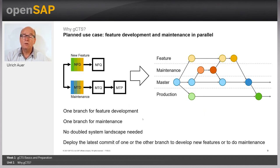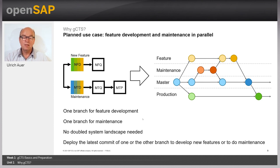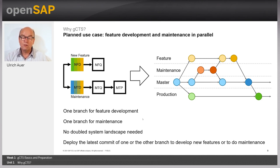Let me introduce some usage scenarios that were impossible before. Maintaining several releases of software components previously required parallel system tracks and complicated double-maintenance work — known as switchover or retrofit. With GCTS, you can maintain several releases of a software component with one system by switching between branches, such as a development branch, maintenance branch, or feature branch.